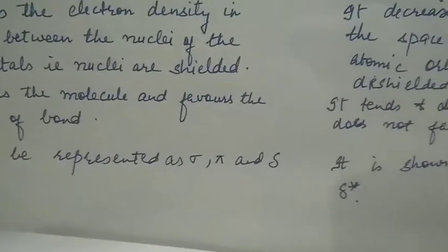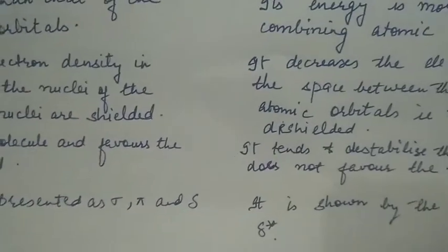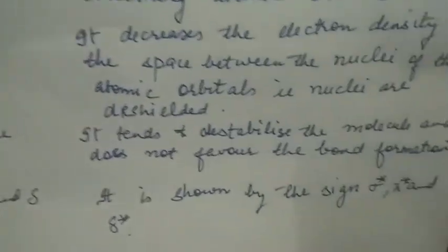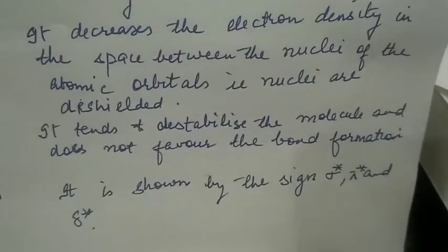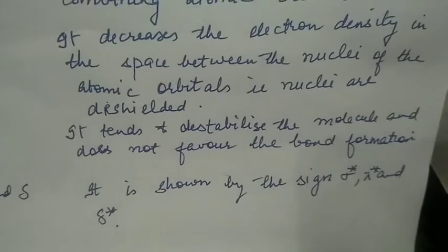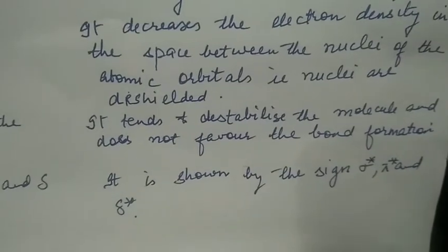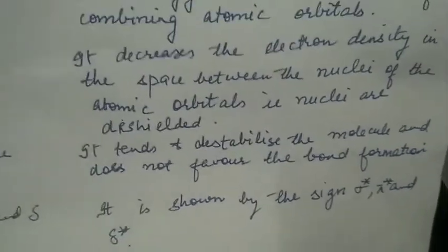An anti-bonding MO decreases the electron density between the nuclei — the nuclei are deshielded. It tends to destabilize the molecule and does not favor bond formation. Bonding MOs are represented as sigma, pi, and delta; anti-bonding MOs are shown as sigma star, pi star, and delta star.